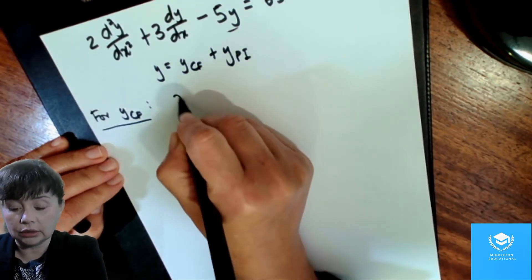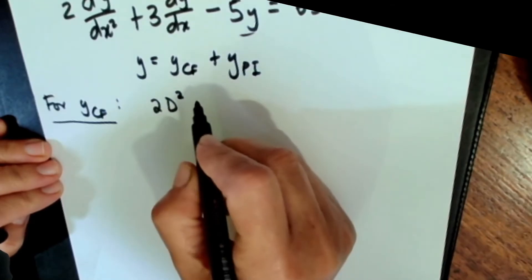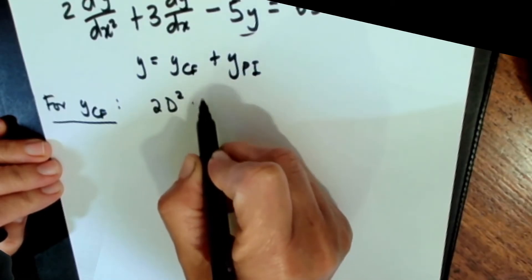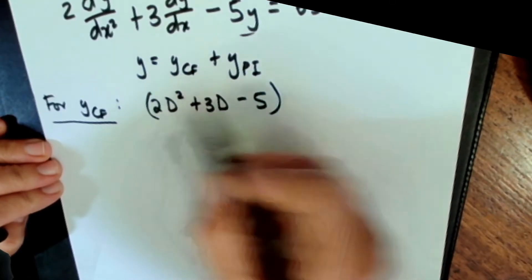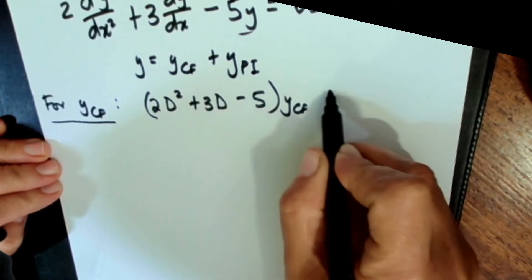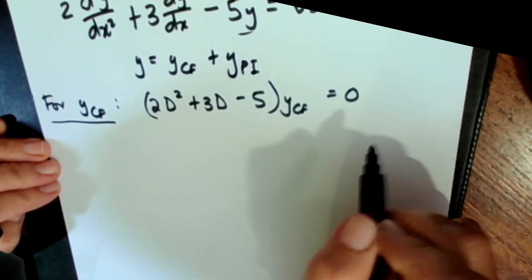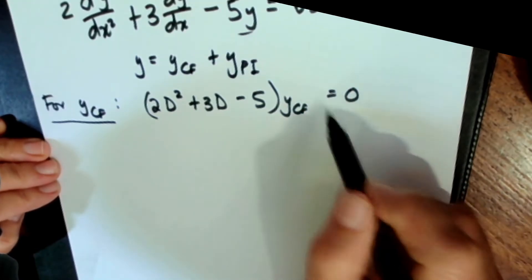for the complementary function, we know that if we use d operator notation we can write the equation out like this. 2d squared plus 3d minus 5 times that complementary function has to give you zero because we assume the homogenous form.